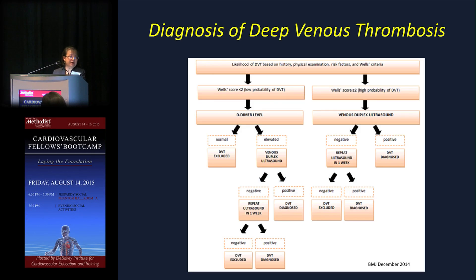If you combine the Wells score with a D-dimer: for a Wells score less than two (low probability), order a D-dimer — if normal, DVT is ruled out; if elevated, get an ultrasound. If ultrasound is negative, repeat it in a week; if still negative, DVT is ruled out; if positive, DVT is diagnosed. For a Wells score greater than two (high probability), go immediately to ultrasound — if negative, repeat in a week; if negative again, DVT is ruled out; if positive, DVT is diagnosed and treated.